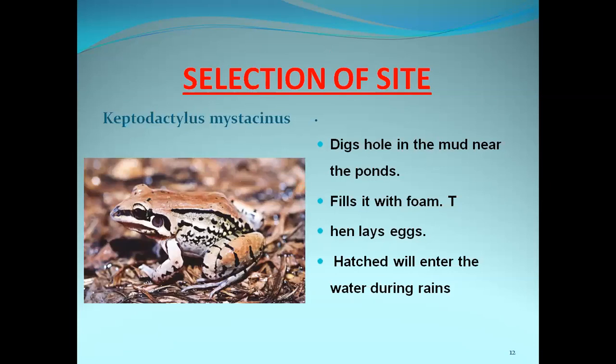Another example for selection of site is Leptodactylus moustacinus. These frogs dig holes in the mud near ponds and fill the hole with foam, then lay eggs in that foam. Hatched larvae will enter the water during the rain, and until the rains come, the larvae survive in the hole only.